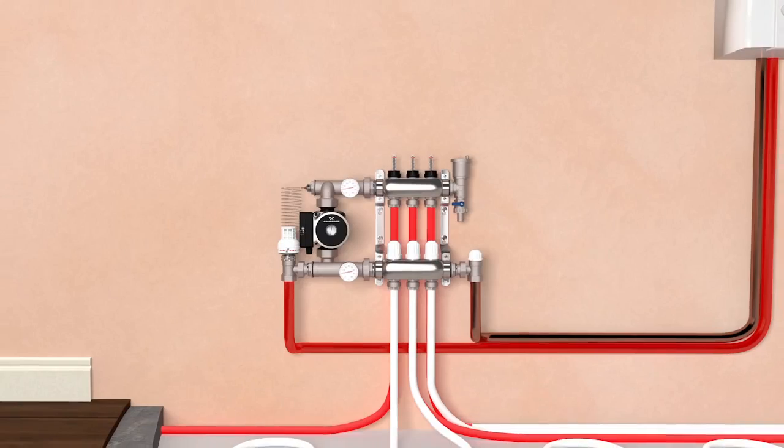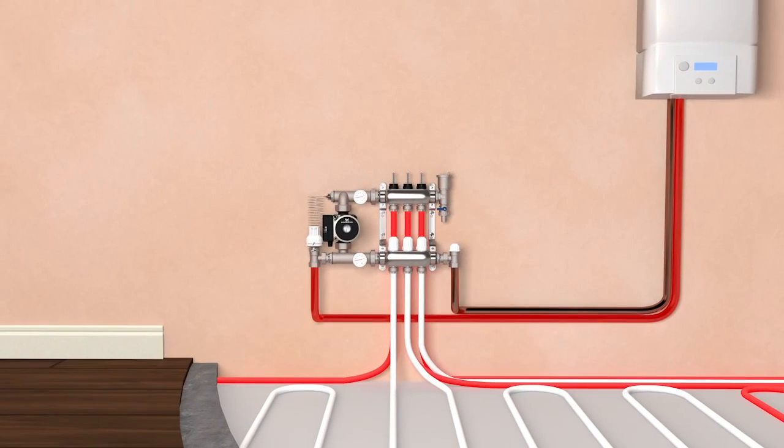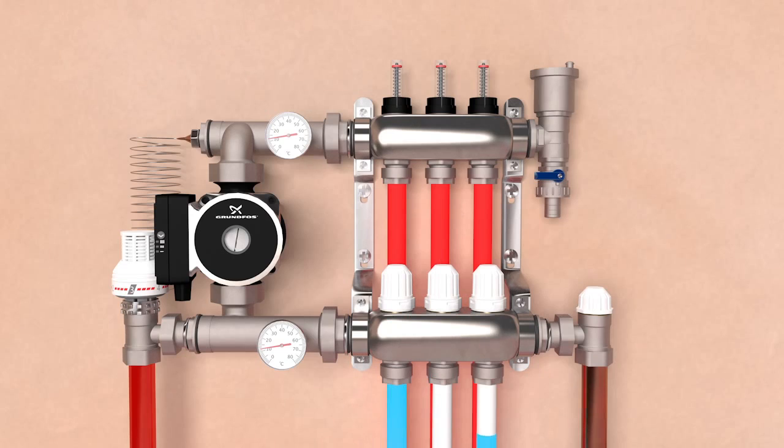The warm water is then circulated through the top flow bar and down the pipe loops to heat your floor. The water then returns to the manifold into the bottom return bar where it either returns to the boiler for heating via the boiler return valve or it's recycled back into circulation.